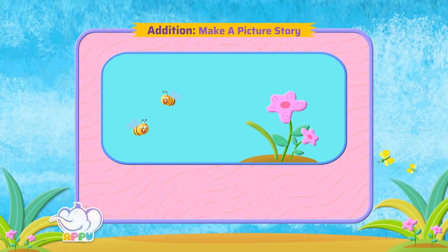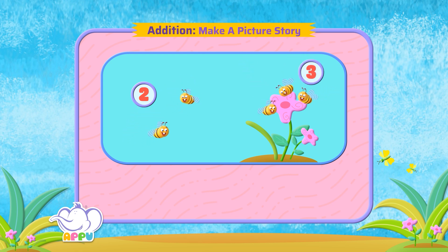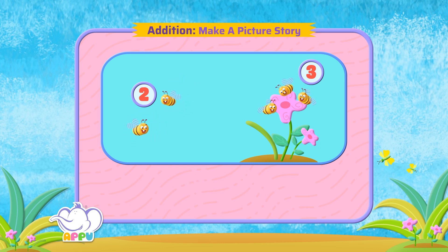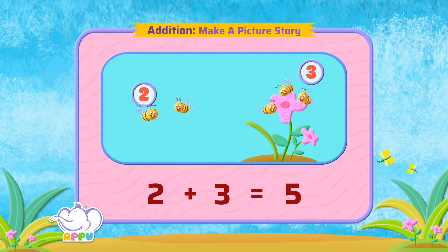In this picture, we see two bees flying and three bees sitting on a flower. So, how many bees do we see in all? For example, putting together or adding the two bees flying and the three bees sitting on a flower equals to five bees in all.